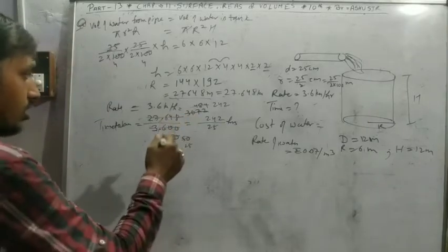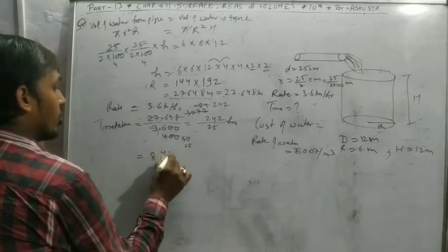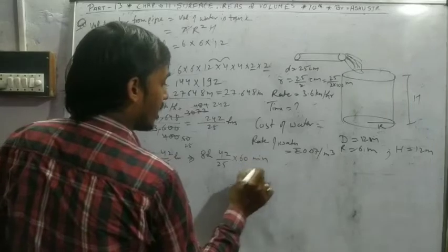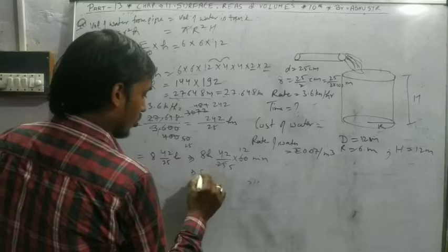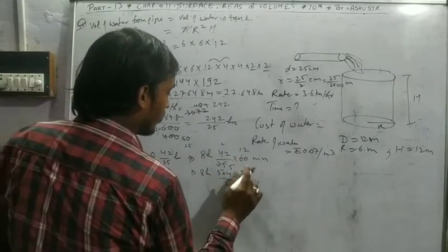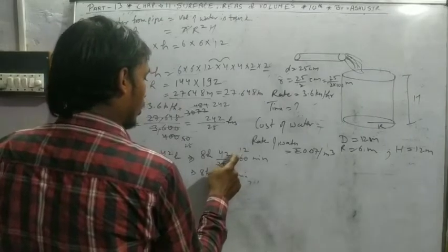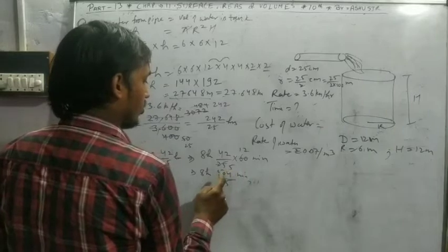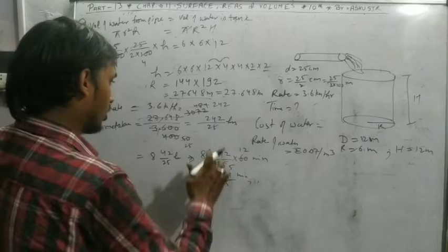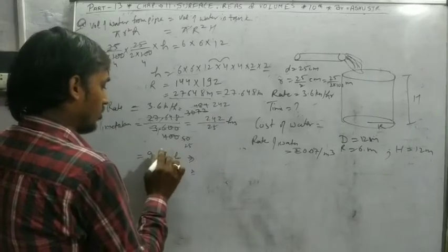But this is difficult, so we convert it to a more readable form. We write 8 whole 42 by 25 hours. So 8 hours plus 42 upon 25 times 60 minutes. Working through: 8 hours, 50 by 5 minutes. Wait, let me recalculate. It's 9 whole 17 by 25.